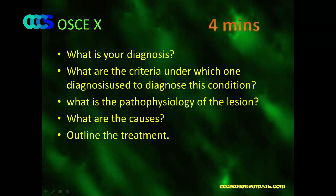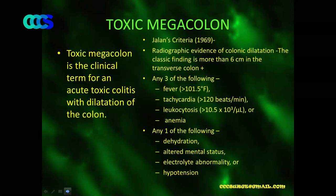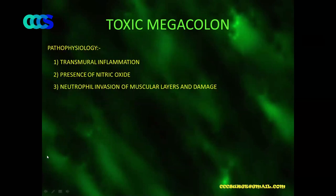This is a toxic megacolon — a clinical term from acute toxic colitis with dilatation of the colon. The 1969 criteria still followed today require radiographic evidence of colon dilatation more than 6 centimeters in the transverse colon, plus any three of the following: fever more than 38.6°C, tachycardia more than 120, leukocytosis more than 10,500, or anemia; plus any one of: dehydration, altered mental status, electrolyte abnormality, or hypotension.